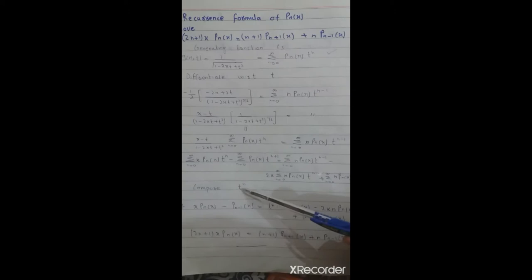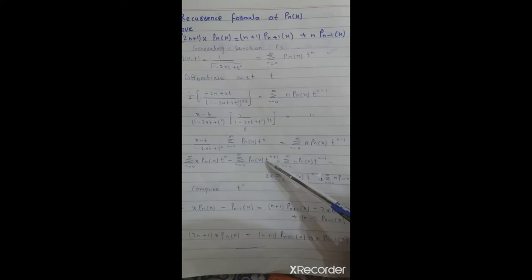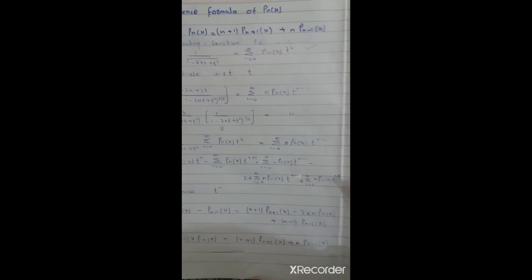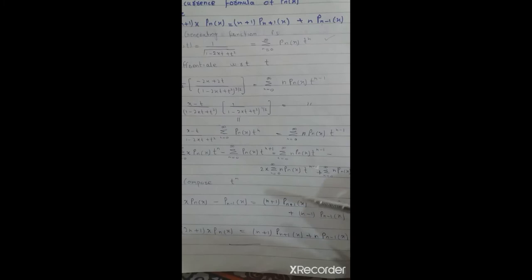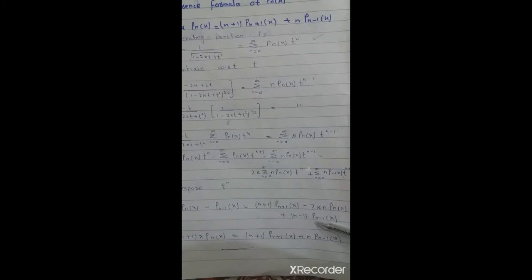After comparing the coefficient of tⁿ, we get x·Pn(x). We change the power of t accordingly, replacing tⁿ⁺¹ and tⁿ⁻¹ terms. So we get: x·Pn(x) minus Pn₋₁(x) is equal to (n+1)·Pn₊₁(x) minus 2nx·Pn(x) plus (n-1)·Pn₋₁(x).